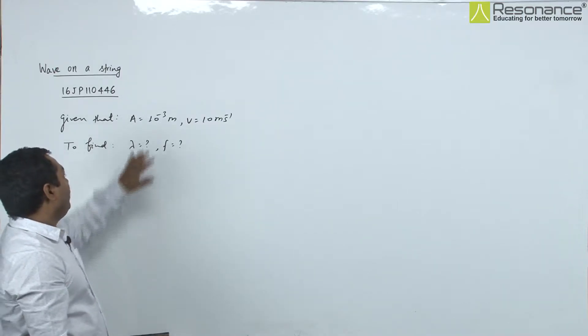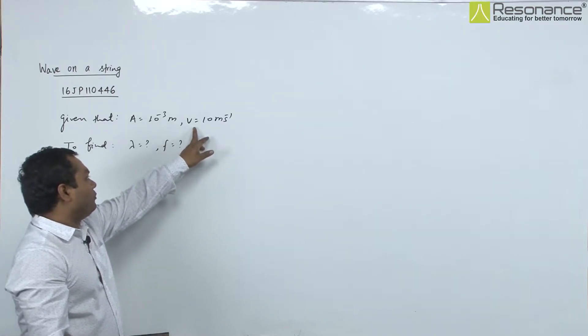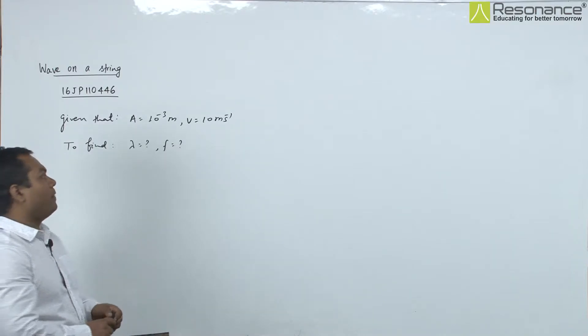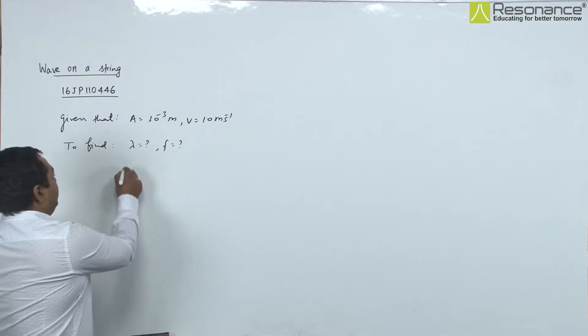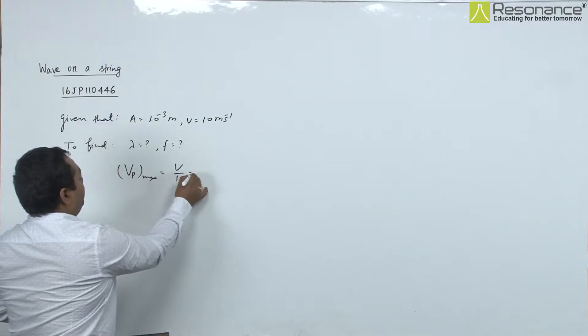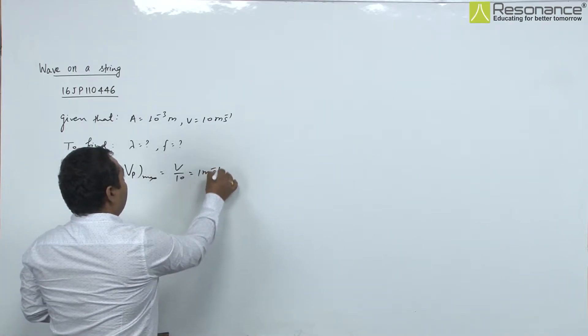In this question, it is given that amplitude is 10^-3 and velocity is 10 meters per second. The maximum value of particle velocity is V/10, which equals 1 meter per second.